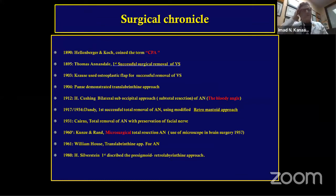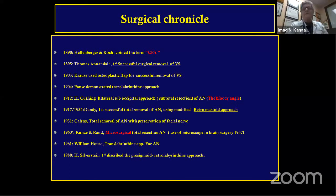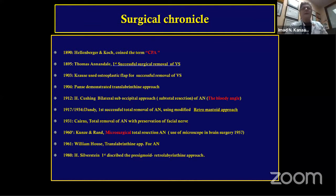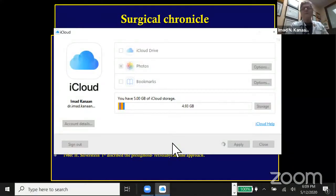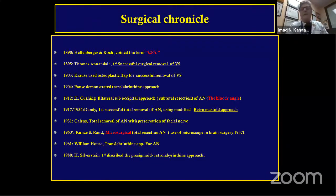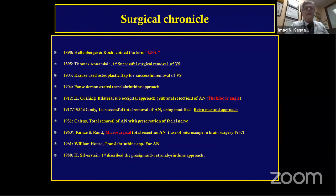A piece of historical context: Koch and Hellenberger were the first to coin the CP angle as a region. Cushing called that area 'the bloody angle' because outcomes were very poor at the time with no microscopy. Dandy modified the suboccipital approach into a more lateral unilateral approach, creating the first retromastoid approach in 1934.